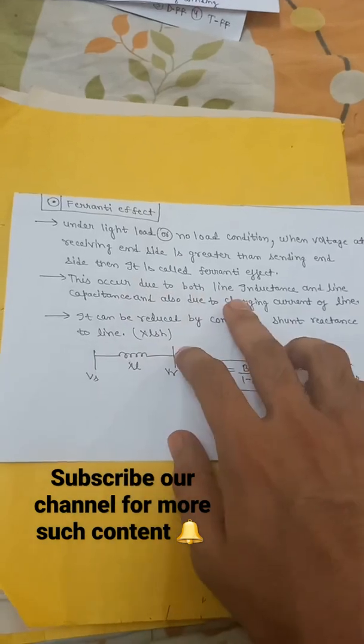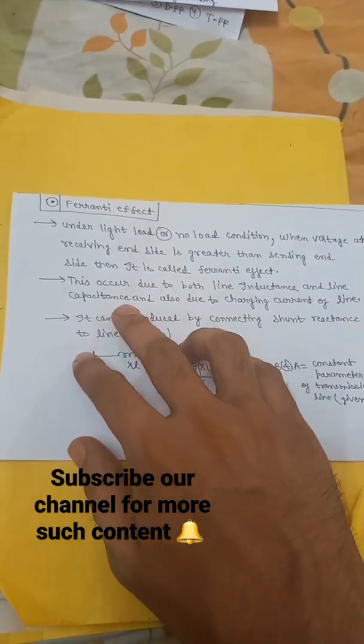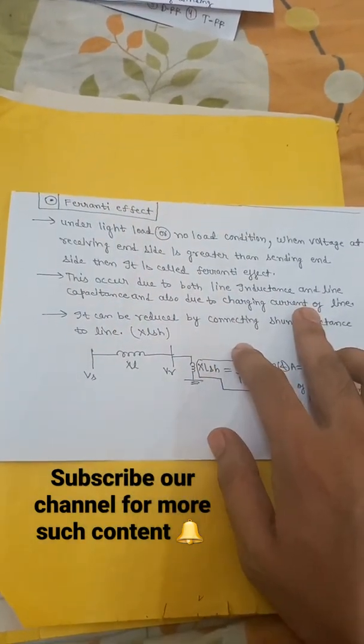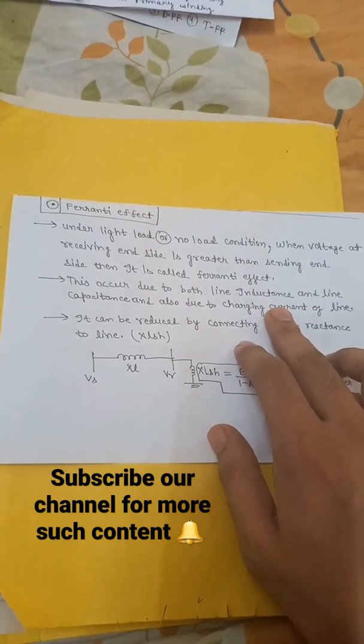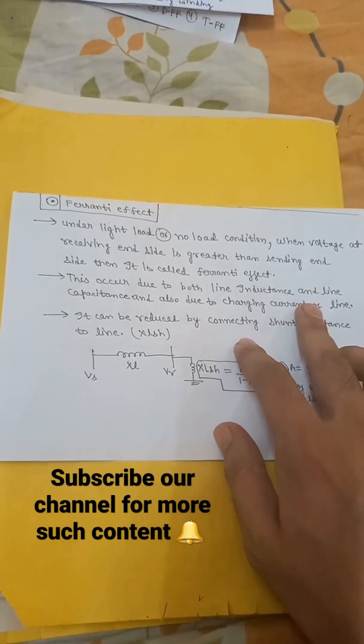And second point is this occurs due to both line inductance and line capacitance, and also due to the charging current. Charging current is given by the expression IC equals V by XC, that is capacitive reactance.